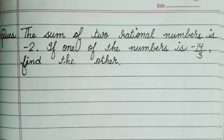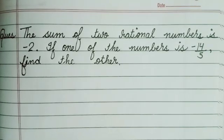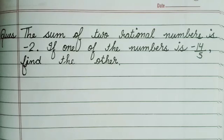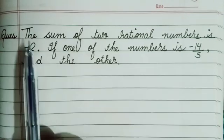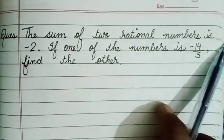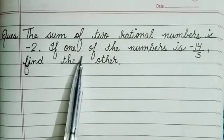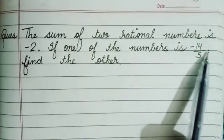Hi friends, welcome back to my channel. Today we are going to find the solution of this question. The question is: the sum of two rational numbers is minus 2. If one of the numbers is minus 14 upon 5, then find the other.